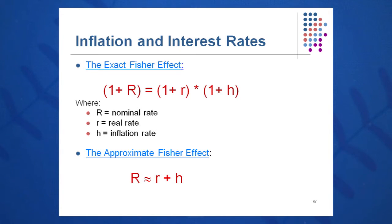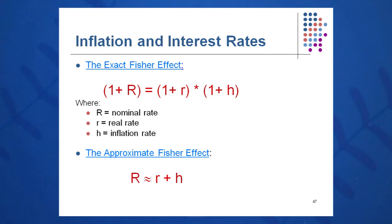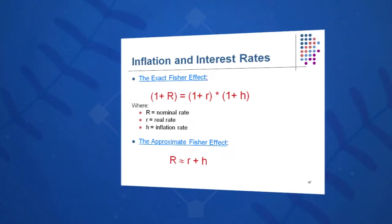We can approximate this by multiplying all of that out: we get one plus R plus H plus RH. We see that RH could be very, very small — for interest rates between say five and 20%, it's very, very small. So the approximate Fisher Effect gives us big R equals little r plus little h to get an approximation of total return or nominal return.